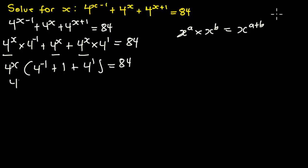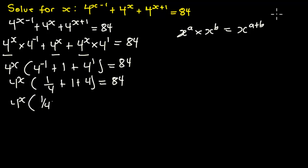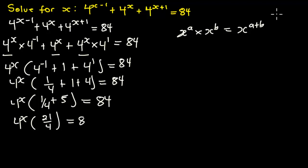Now we simplify the bracket: 4 exponent (negative 1) is 1 over 4, plus 1, plus 4. That gives us 1 over 4 plus 5, which equals 21 over 4. So we have 4 exponent x multiplying 21 over 4 equals 84.